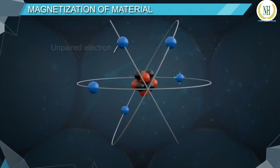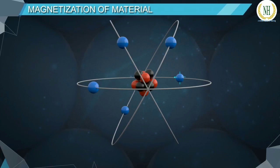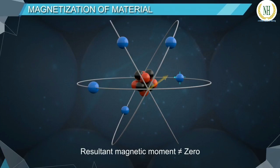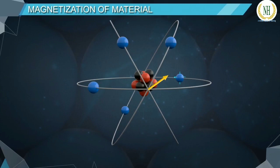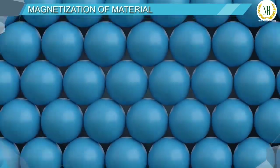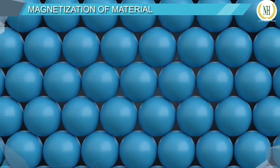Some elements have unpaired electrons in their orbitals. In such atoms, the magnetic moment of the unpaired electron is not cancelled due to the absence of a paired electron. Due to this, the resultant magnetic moment in the atom will not be equal to zero. The atom behaves like a tiny bar magnet.